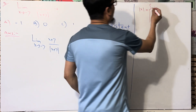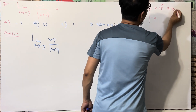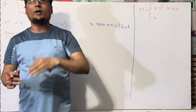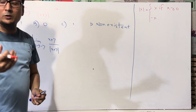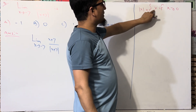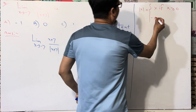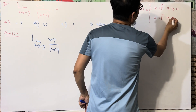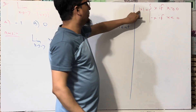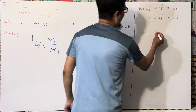There is a condition: if x is greater than or equal to 0, meaning zero or all positive numbers, then mod(x) = x — we take the positive value. And if x is less than 0, then mod(x) = minus x.